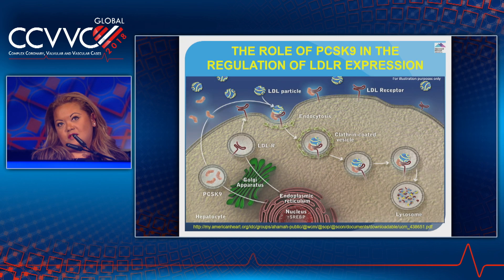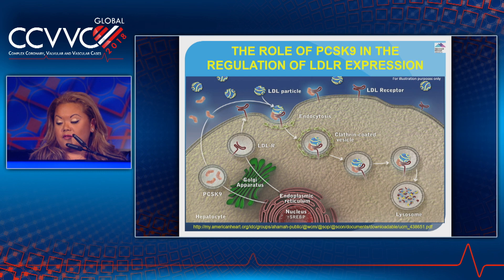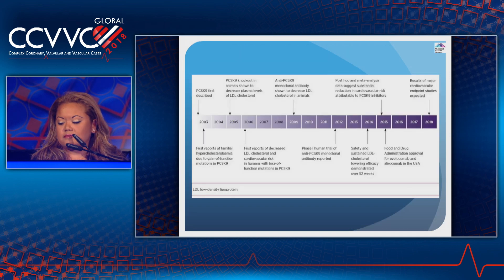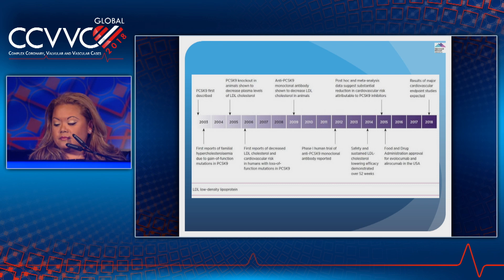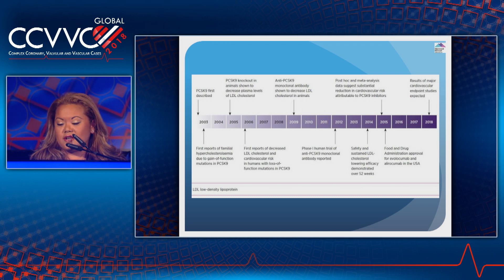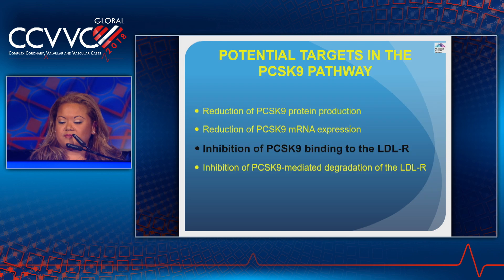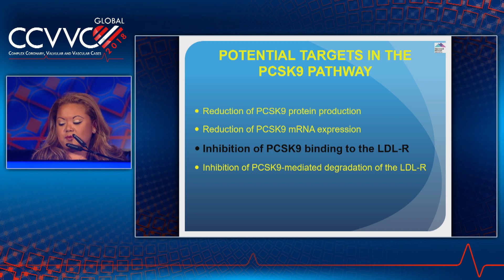By inactivating PCSK9 via inhibition, more receptors are available to capture LDL for metabolism and therefore removal from the blood. This illustration shows the timeline of developments in the history of PCSK9. In 2003, PCSK9 was first identified. In 2006, loss-of-function mutations in PCSK9 decreased LDL-C and cardiovascular risk in humans. And in 2015, the FDA approved Evolocumab (Repatha) and Alirocumab (Praluent). Potential targets in the PCSK9 pathway can be aimed at either reducing production or expression, or inhibiting binding or degradation of the receptor.